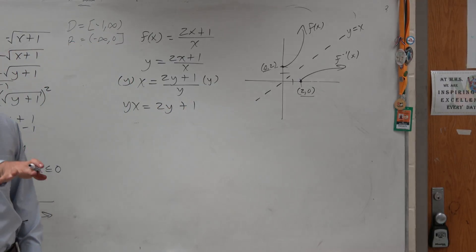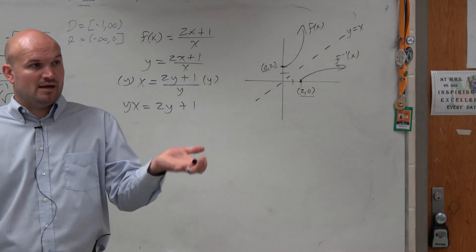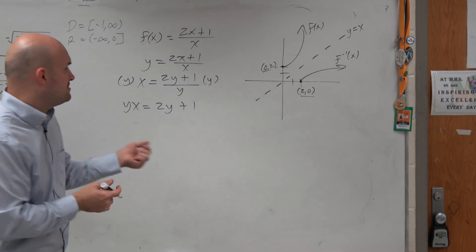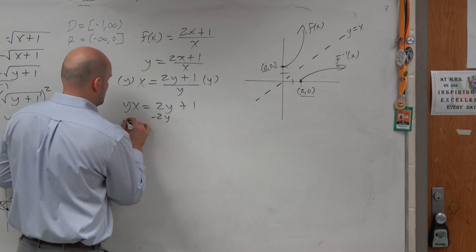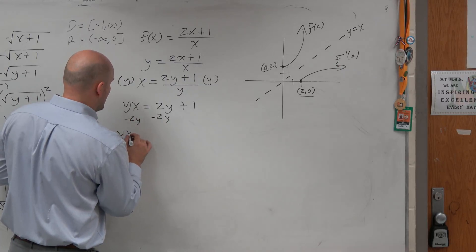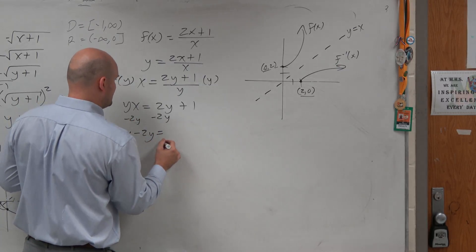Now, you guys did learn this in Algebra 1. How do you solve an equation when you have the variable on both sides? You get them to the same side. yx minus 2y is equal to 1.